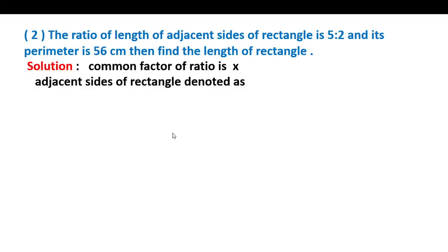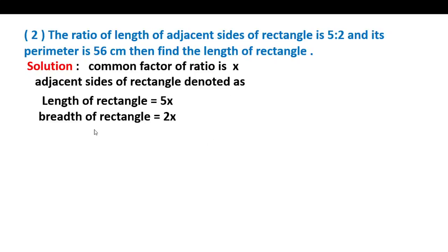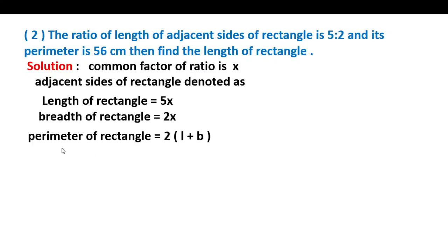Solution: the common factor of the ratio is x. Therefore the adjacent sides of the rectangle are denoted as length = 5x and breadth = 2x. Now we apply the perimeter formula: the perimeter of a rectangle is equal to 2 × (length + breadth), that is 2 × (l + b).